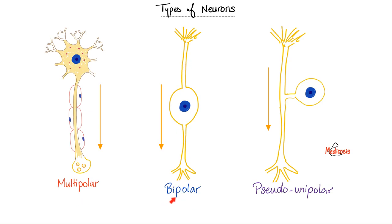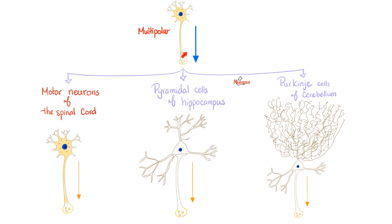How about this one? One and two—that's bipolar. How about this one? Just one—that's why it's unipolar, but it's pseudo-unipolar. The multipolar neurons are subdivided into three categories: motor neurons of the spinal cord, pyramidal cells of the hippocampus, and Purkinje cells of the cerebellum. The pyramidal cells look like a pyramid. The Purkinje—think of a clown named Purkinje wearing a big funny wig.